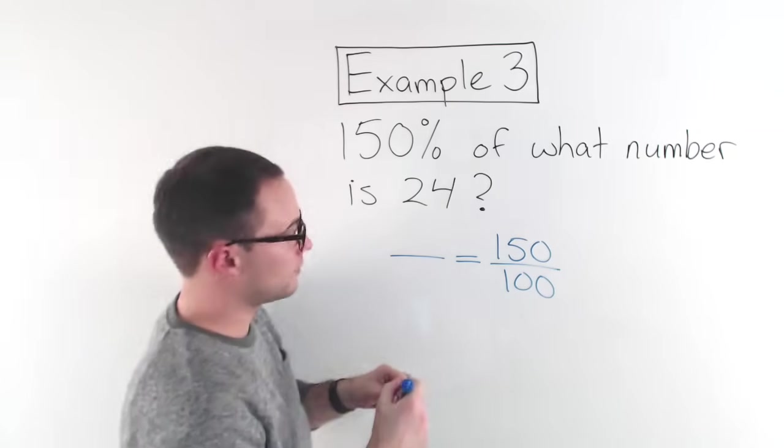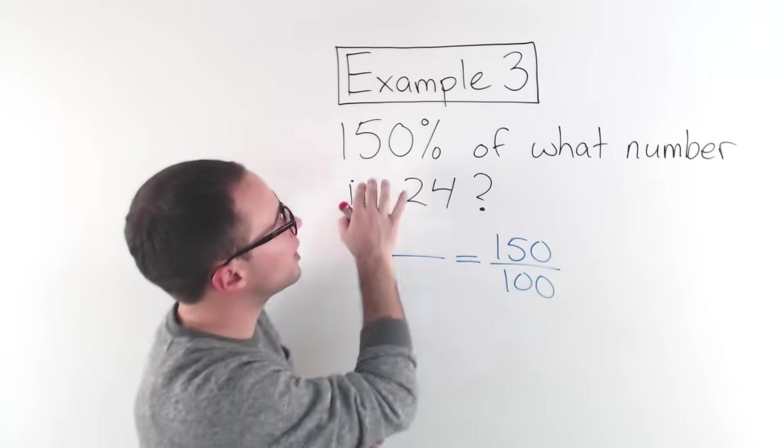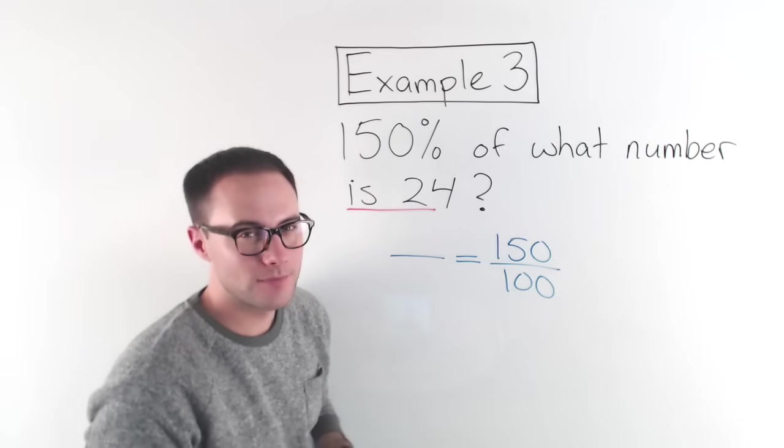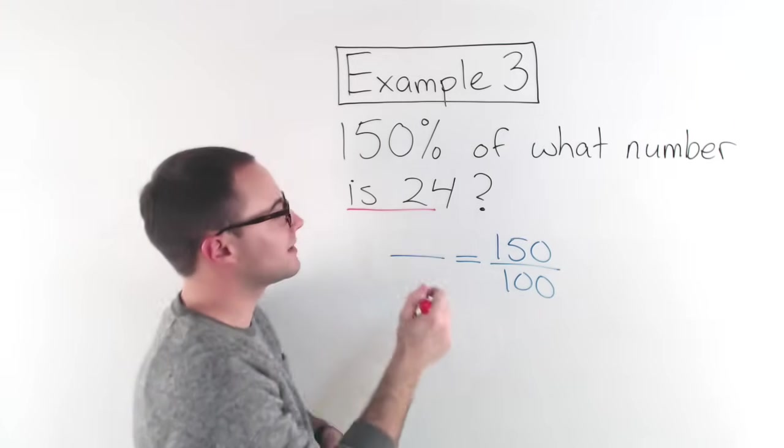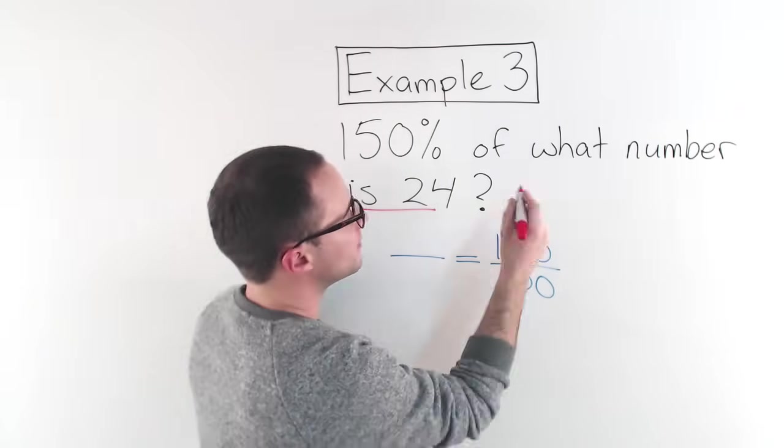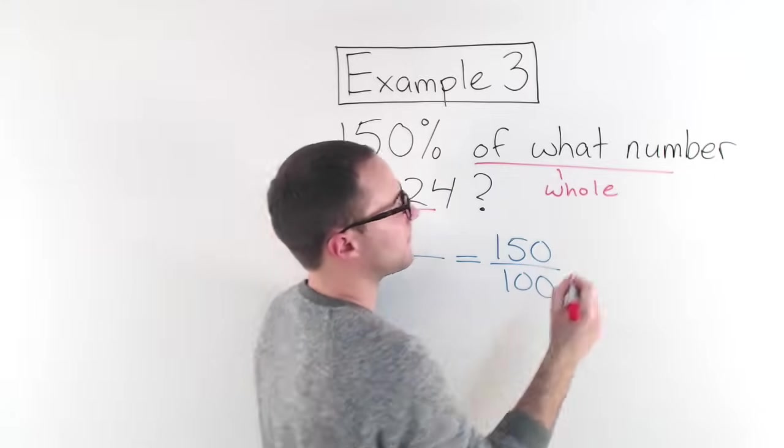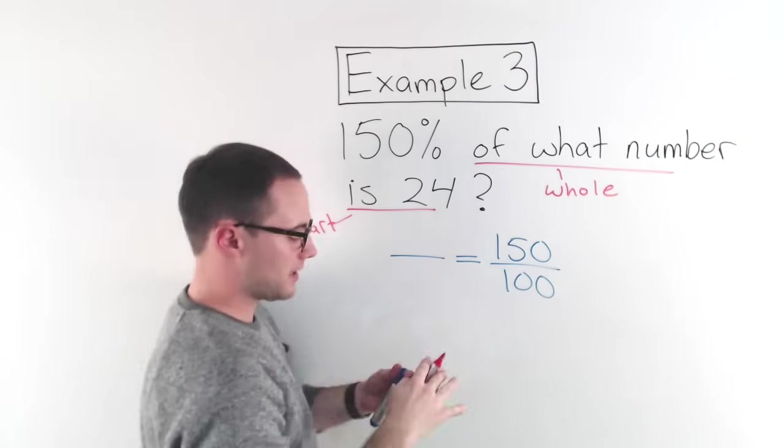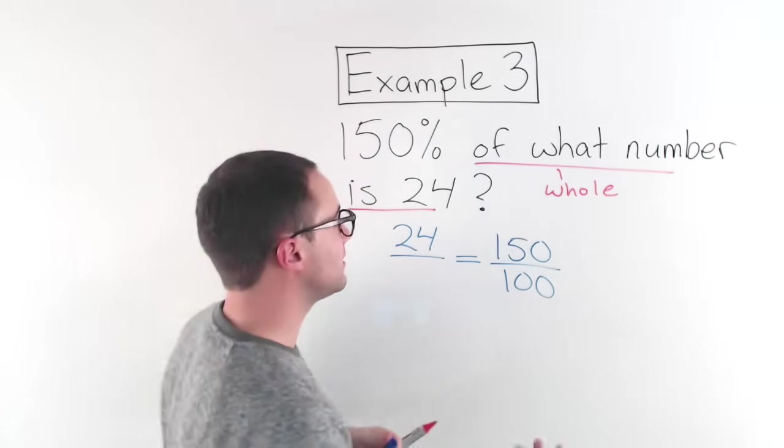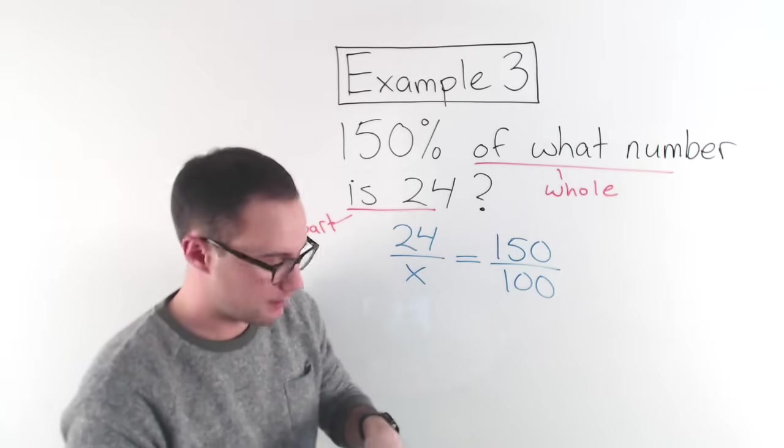Now I just have to figure out what's my part and what's my whole? And what am I trying to figure out? Or what do they want me to figure out? So 150% of what number is 24? Is. Right? Do you remember? That key word is telling us that that is the part. Okay? Of what number? That is the whole. Okay? Which means this 24 needs to go in my numerator. And the whole is what we're trying to find. That's what I don't know. So I'm going to put an x. Okay?